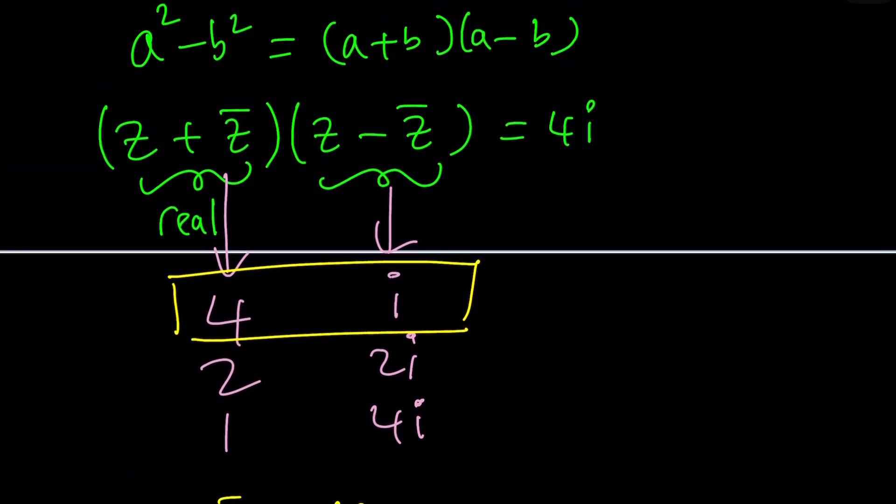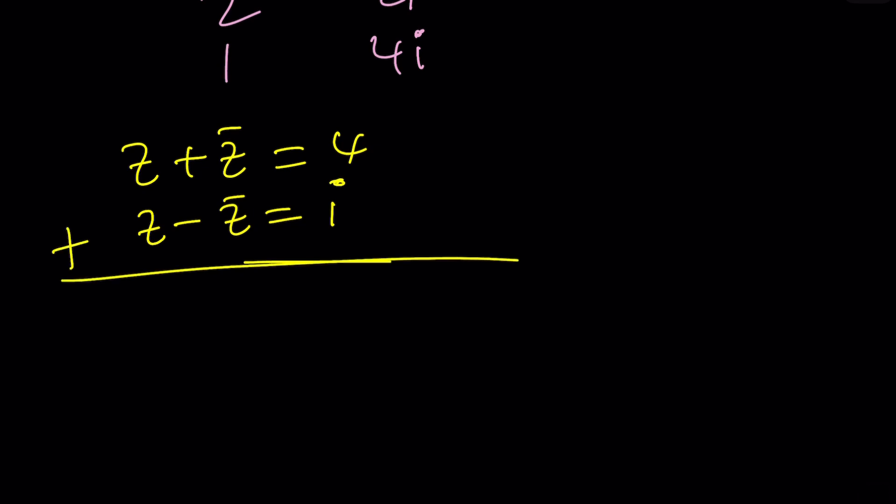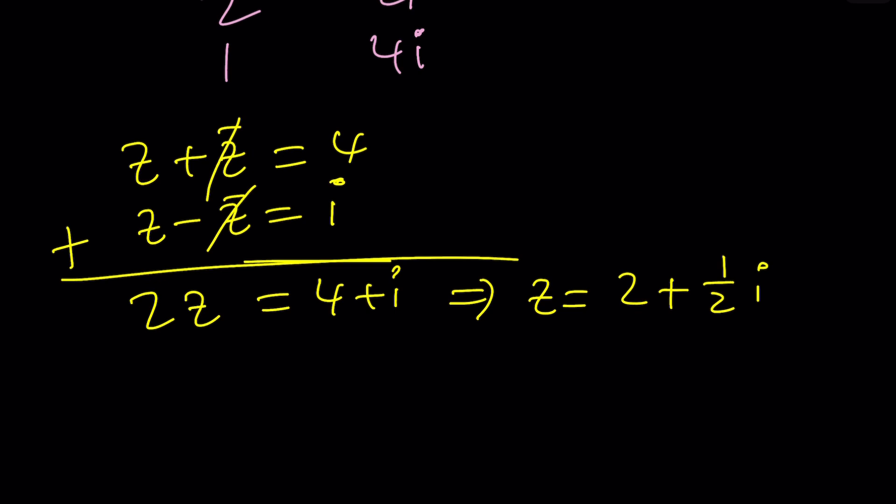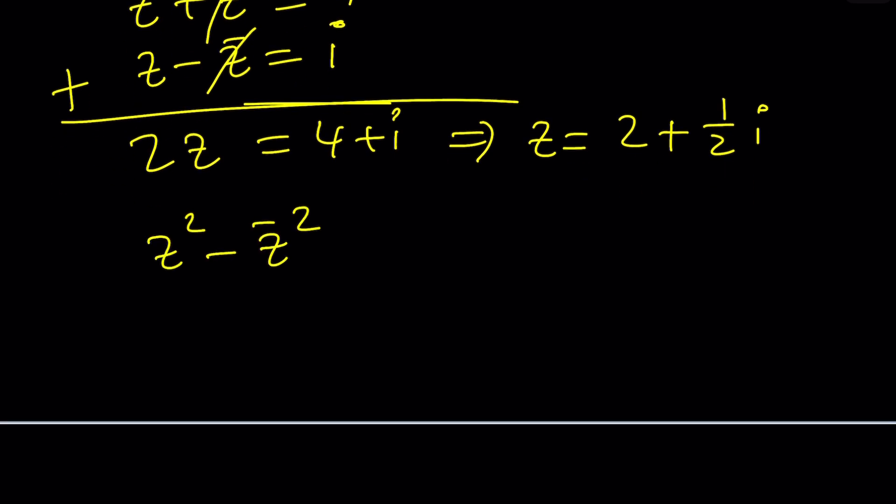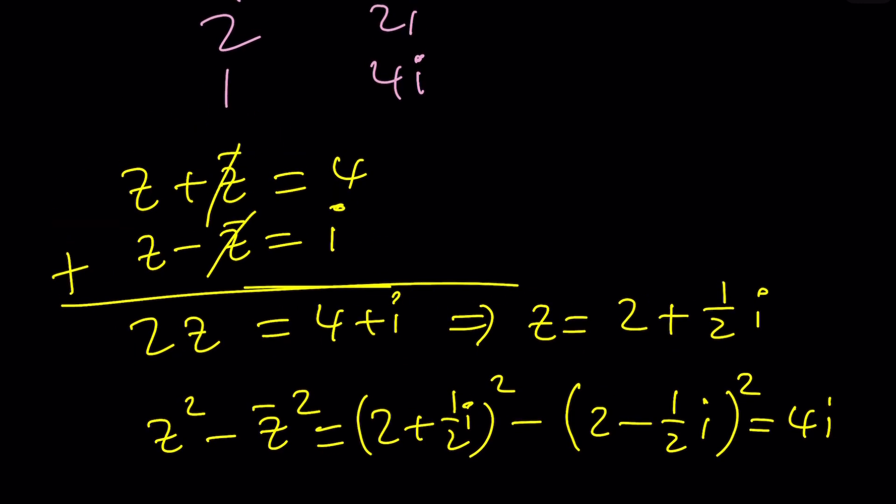This gives us z plus z bar equals 4 and z minus z bar equals i. By the way, this gives you a really nice system that you can solve because all you have to do is add these up. You get 2z. Do you see what i z? Hopefully. From here, you can divide by 2 and you get 2 plus 1 half of i. Uh-oh, the imaginary part is a fraction, which is, I guess, fine in this case. So would this work? Let's test it out. If I plug it into the original equation, is it going to work? z squared minus z bar squared? This is z squared. And this is z bar squared. And that should give me 4i. And it does. Actually, you don't really need to test this out because you can just test both of these equations. The sum of z and z bar is 4, their difference is i. It's verified. Good. We got a solution.